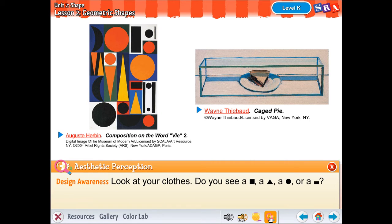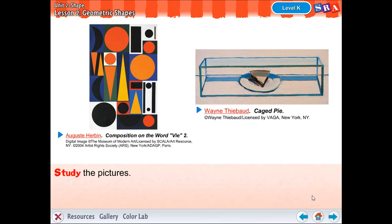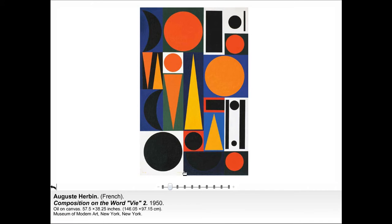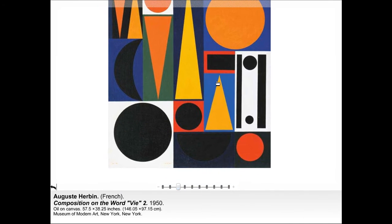You can look at your clothes. Do you see a square in your clothes? Do you have a triangle, maybe, or a circle or maybe a rectangle? You may not have one on today, but I'm sure you guys have some shirts that look like that. So let's study these paintings. Let's look at this one right here. Do you know the name Auguste Herbin? Let's look at some of the shapes that we see on here. What shapes do you see?